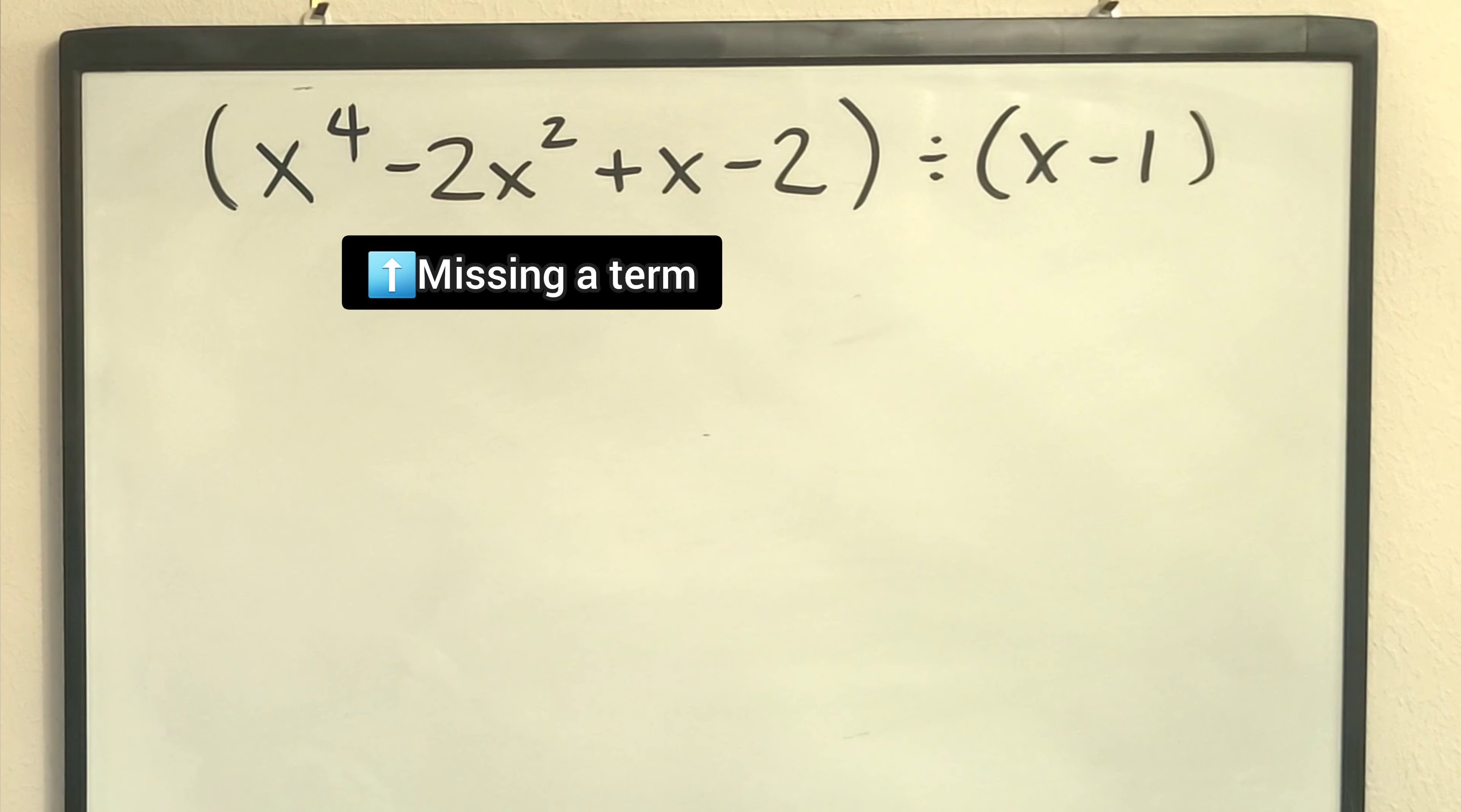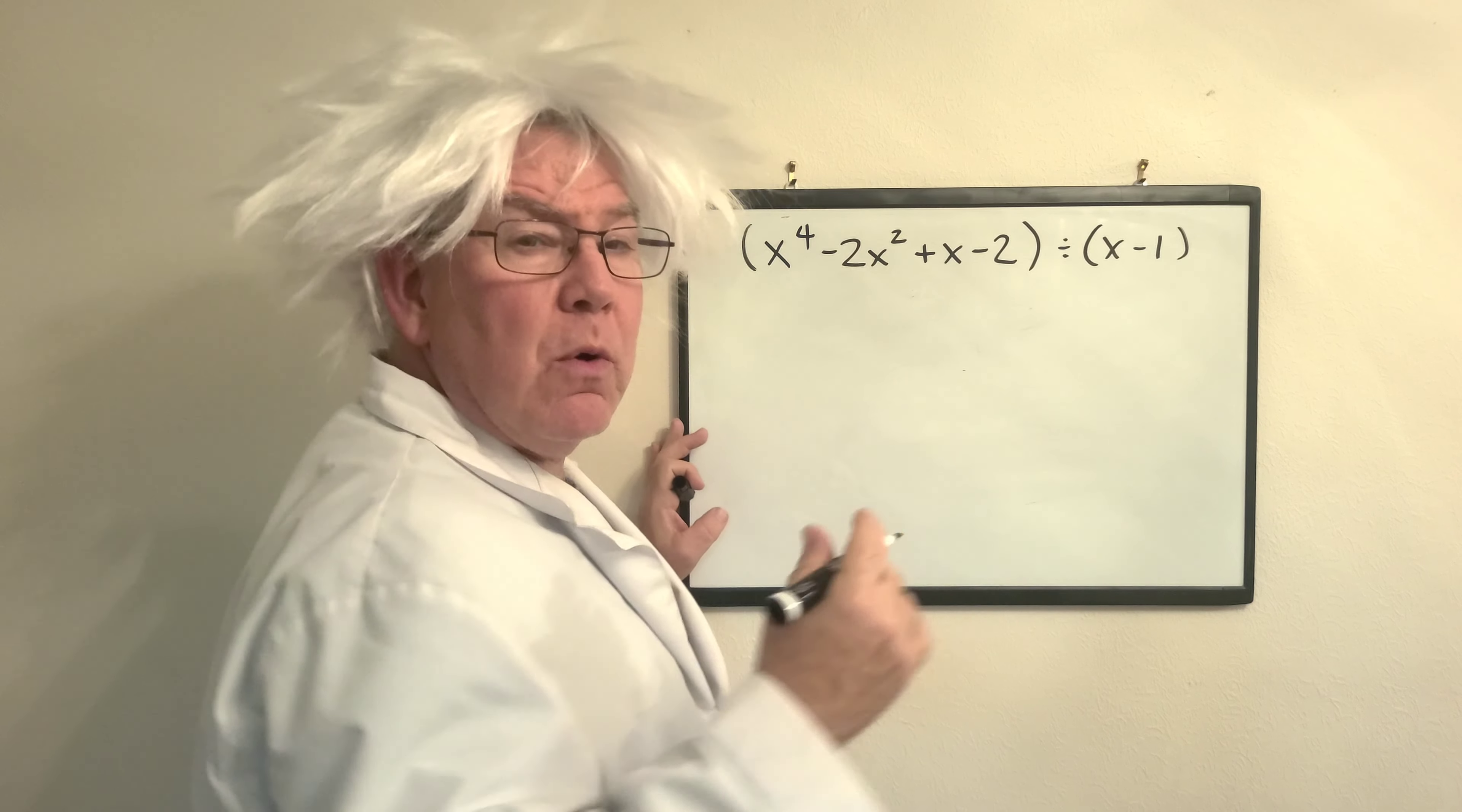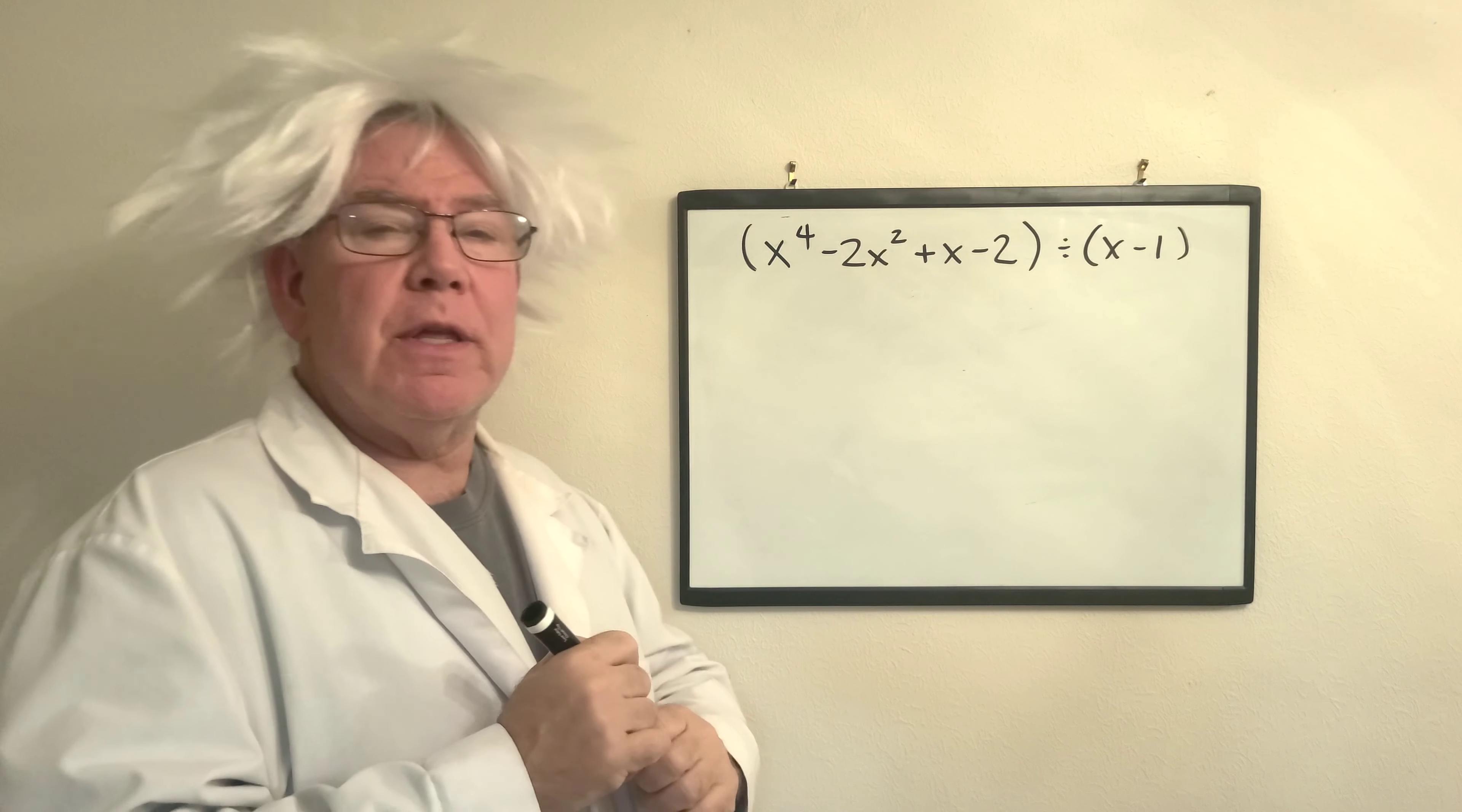Now look and say, okay, pro, we're missing a term. Yes, we are. This is the concept of a zero placeholder. So what we have to do, for example, let me just say this.